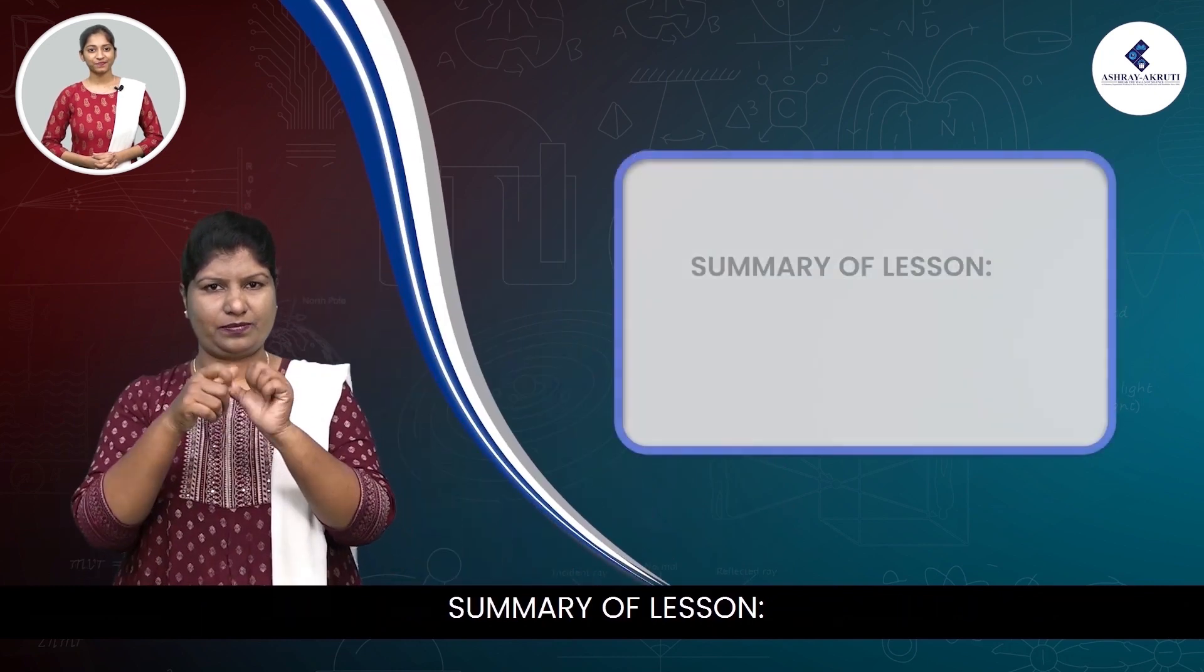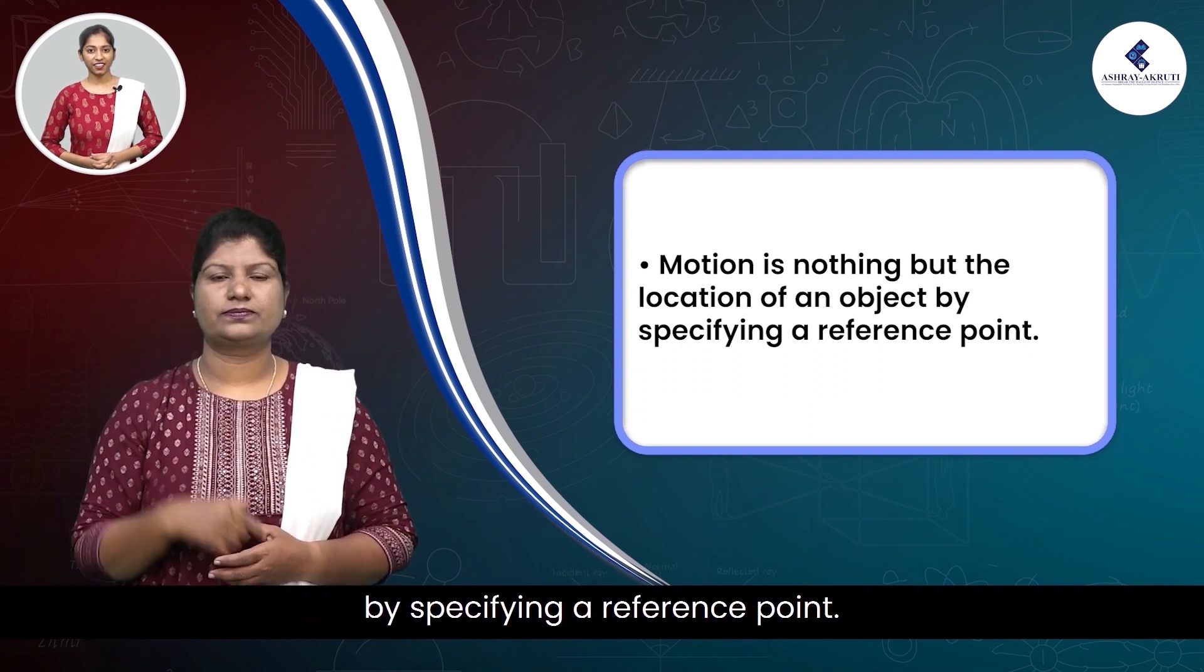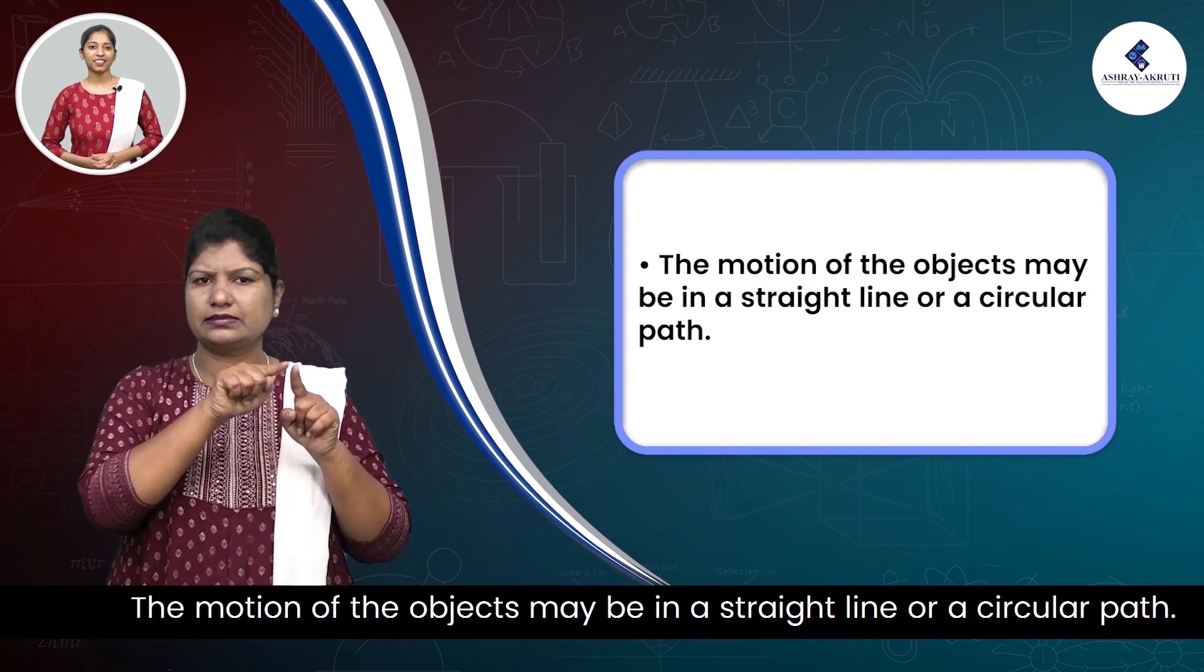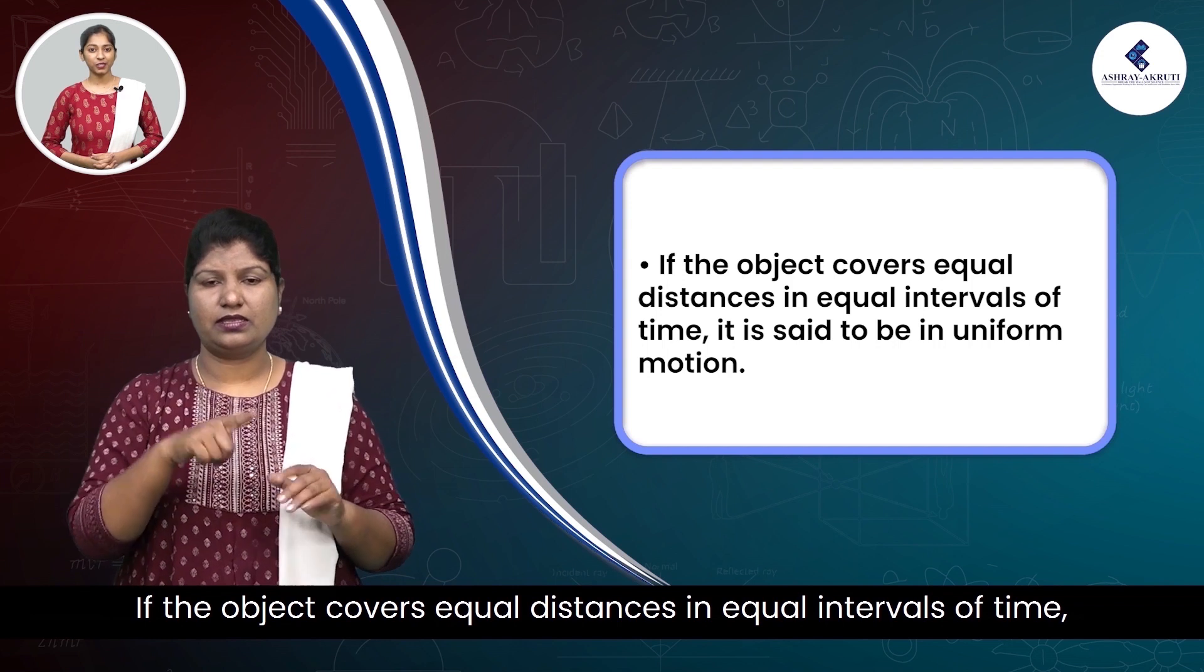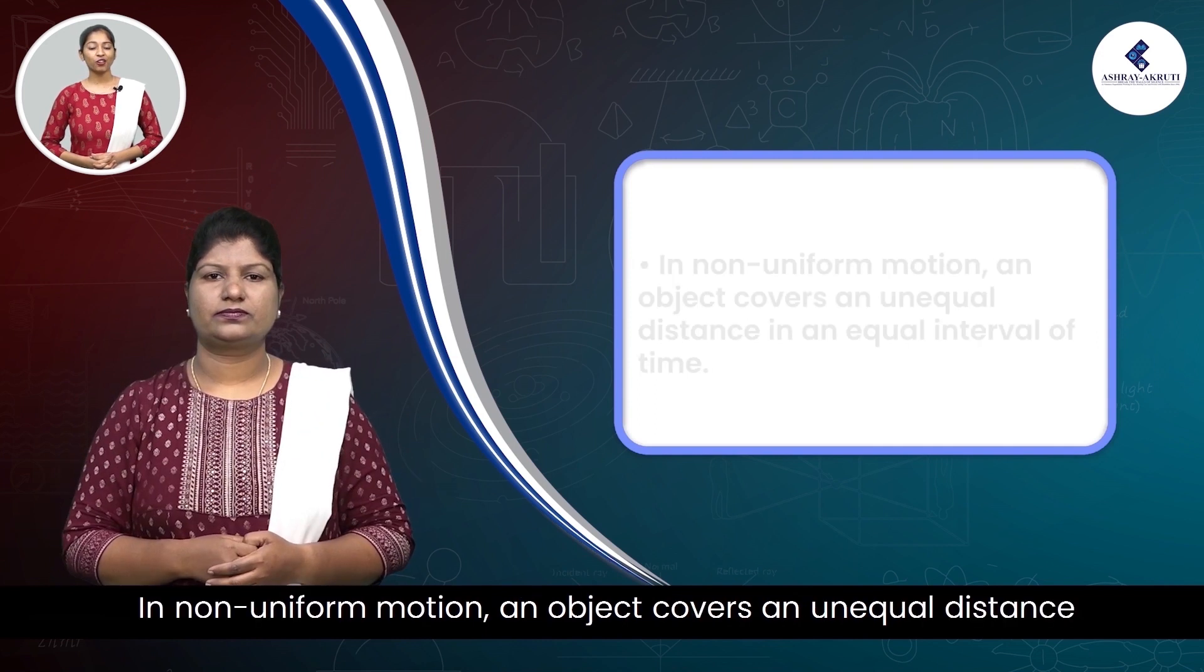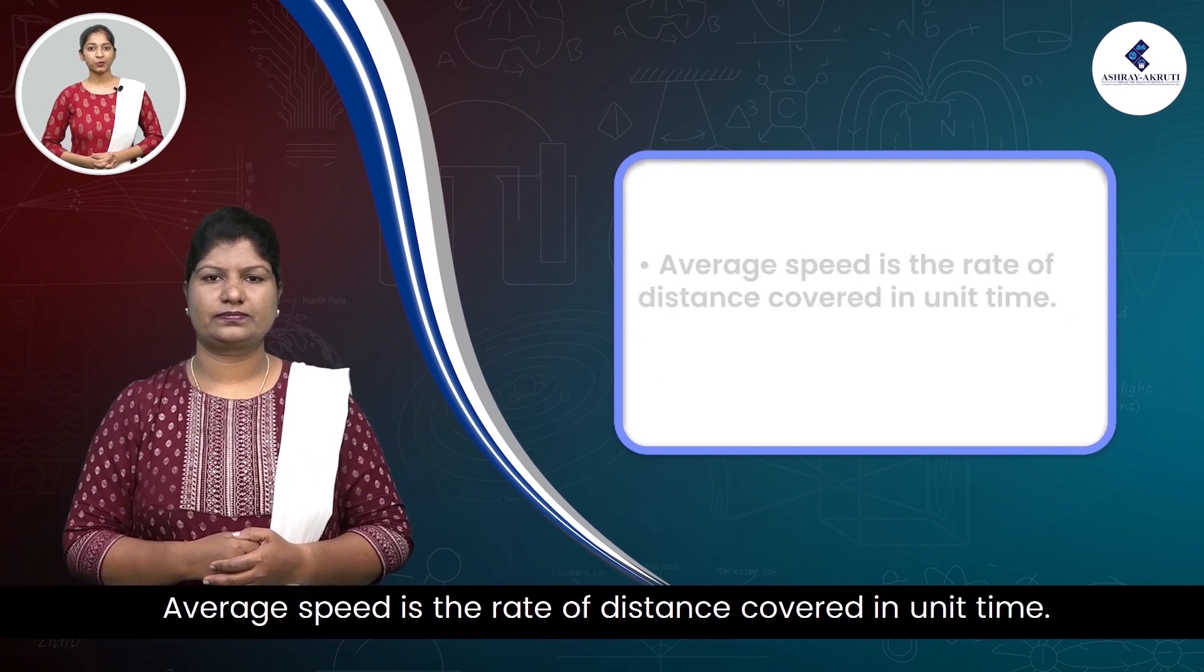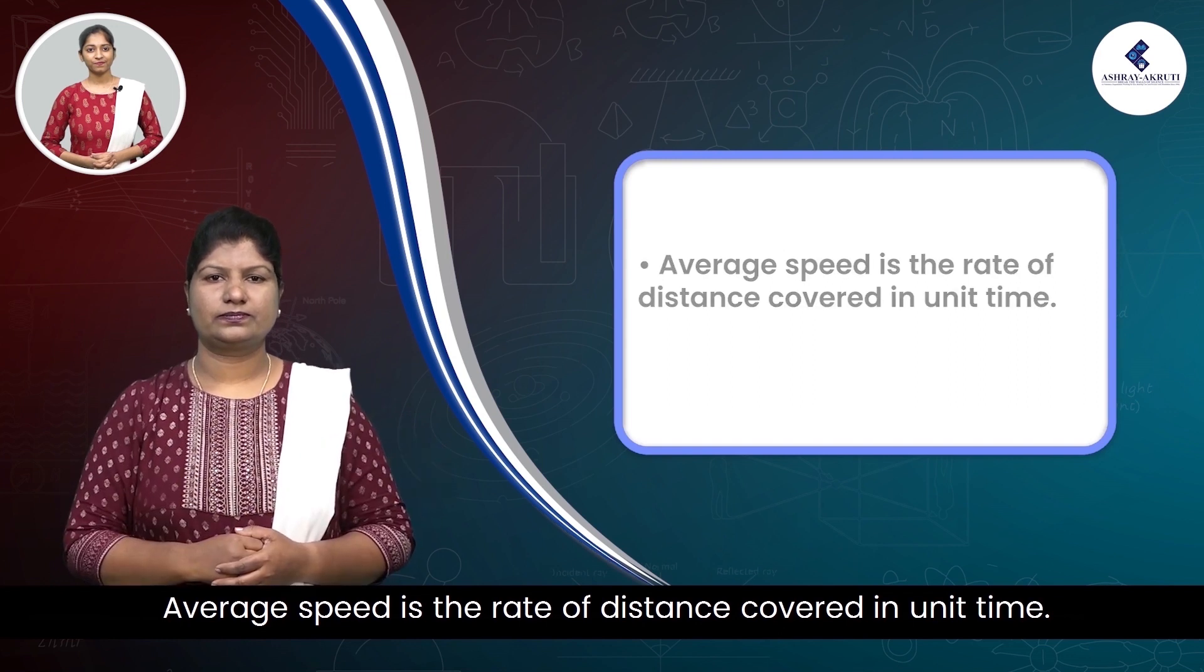Summary of lesson. Motion is nothing but the location of an object by specifying a reference point. The motion of objects may be in a straight line or a circular path. If the object covers equal distances in equal intervals of time, it is said to be in uniform motion. In non-uniform motion, an object covers unequal distances in equal intervals of time. Average speed is the rate of distance covered in unit time. A graph is not a map.